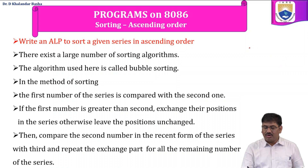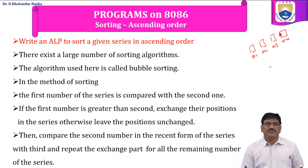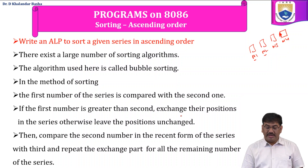Write an ALP to sort a given series in ascending order. We are provided with a few numbers — let us consider four numbers: N1, N2, N3, N4. Whatever order they are provided, we have to arrange them in ascending order, from the smallest to the largest. There are a large number of sorting algorithms. The algorithm used in this program is bubble sort. In this method, the first number of the series is compared with the second one. If the first number is greater than the second number, exchange their positions; otherwise, leave the positions unchanged.